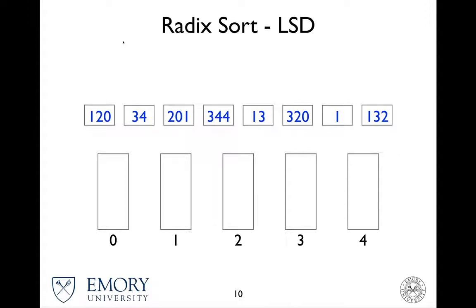But in this example, for space, I'm going to just use 5 digits, so there are only 5 buckets. Okay, so consider the first least significant digit.